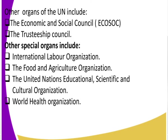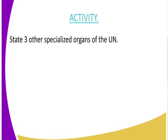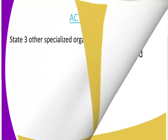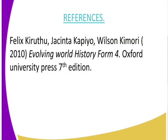Now class, we have looked at a number of the organs of the UN — from the General Assembly, Secretariat, and the Security Council, to the ICJ, the International Court of Justice, and also ECOSOC and the Trusteeship Council. We also looked at the specialized organs: the World Health Organization, FAO, and ILO. For your assignment, state three other specialized organs of the United Nations. For your research, refer to Evolving World: History and Government, Form 4, 7th edition.